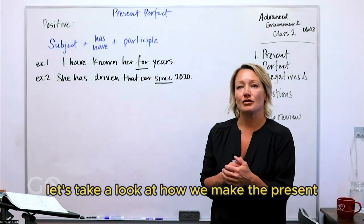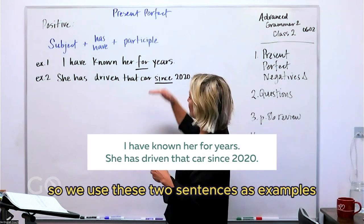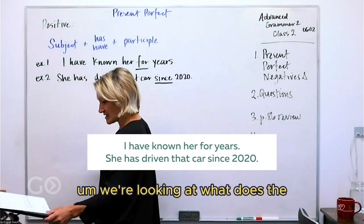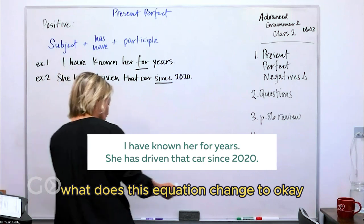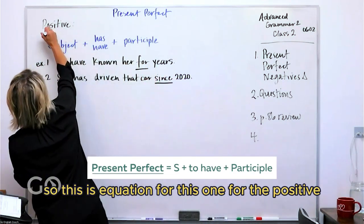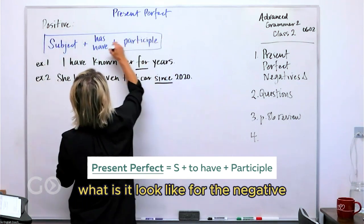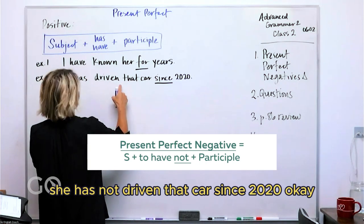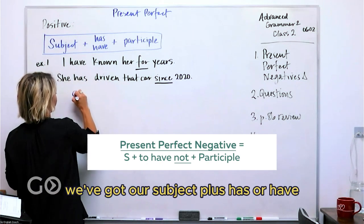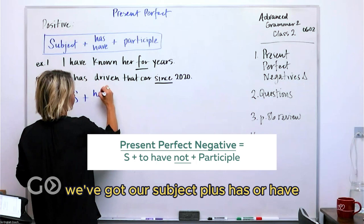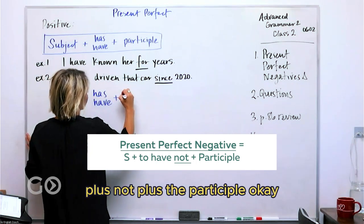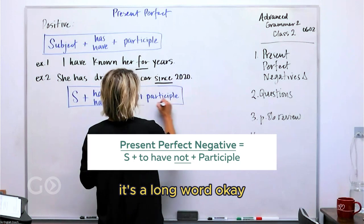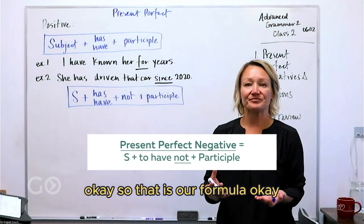Let's take a look at how we make the present perfect in the negative form. So if we use these two sentences as examples, what does the equation change to? For the positive, what does it look like for the negative? 'She has not driven that car since 2020.' So we've got: subject + has or have + not + the participle. Simple. That is our formula.